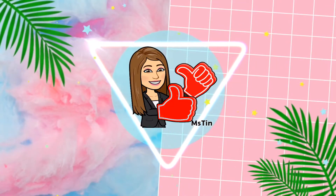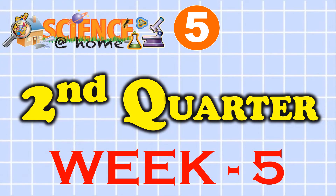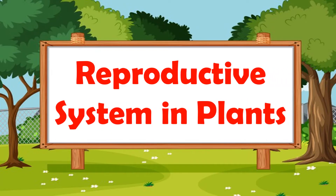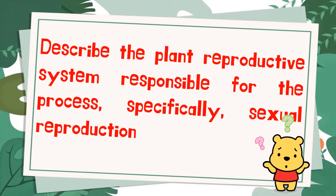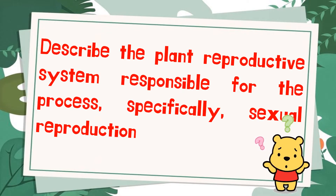Good day learners! I am Miss Tin, your guru kamigo. Today we are going to talk about reproductive system and plants. This lesson is intended for you to describe the plant reproductive system responsible for the process, specifically sexual reproduction. The different activities that you will encounter in this lesson will lead you to understand how different parts of the plant function in producing their own kind.